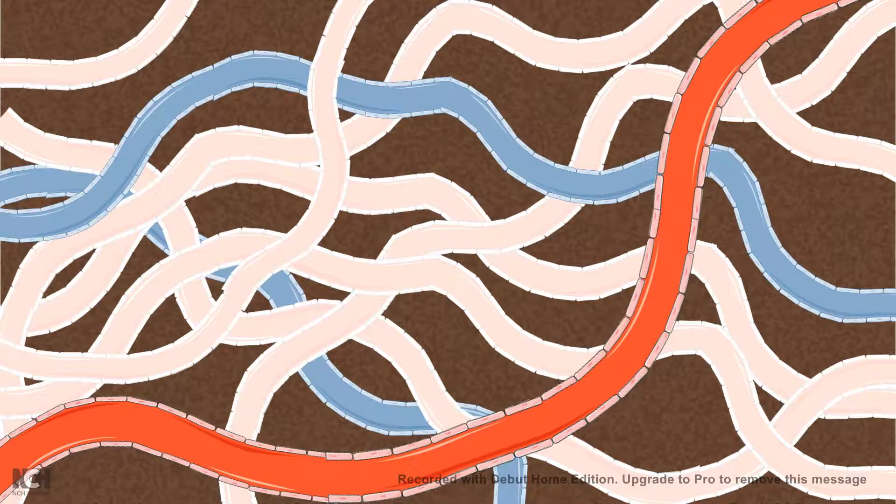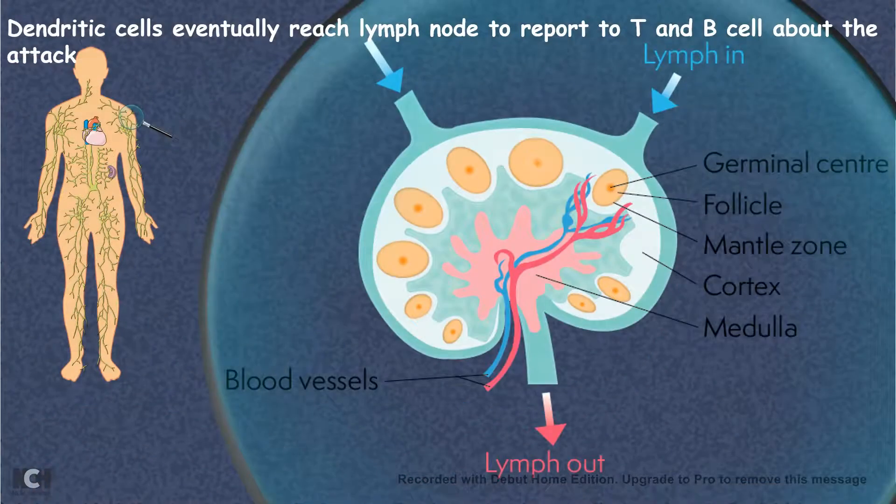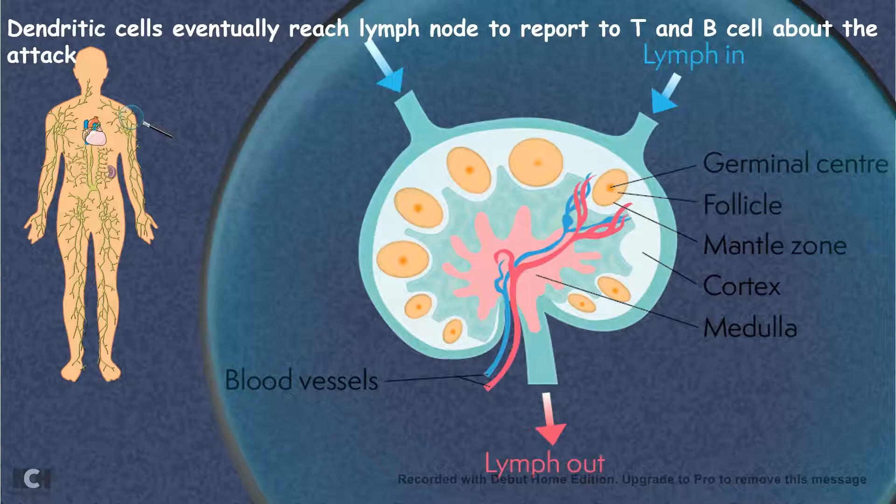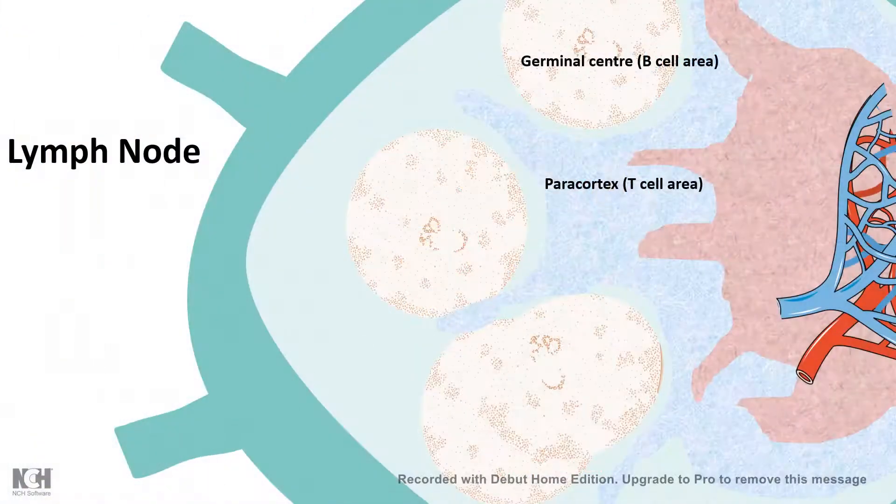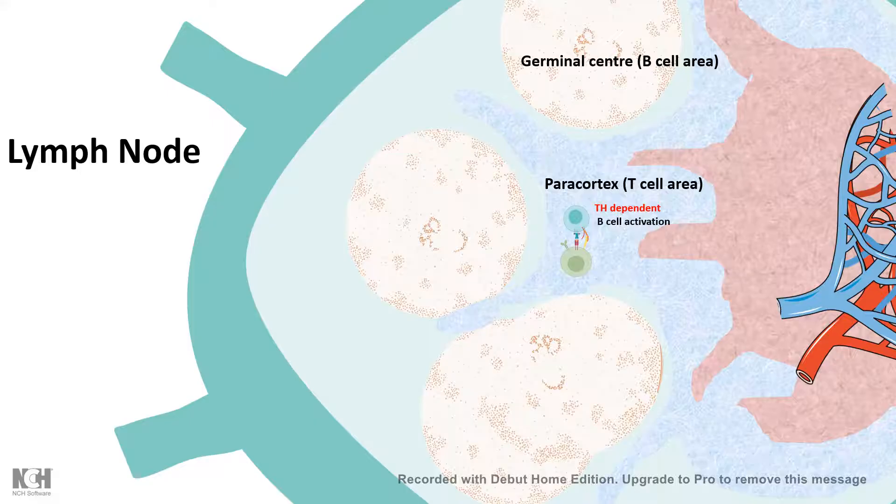This dendritic cell which has recognized the pathogen would eventually migrate towards the lymph node. The lymph node, which is situated all over the body, is actually an army base camp because it has T cell area and B cell area. Inside the lymph node there are specific regions where T and B cells reside.